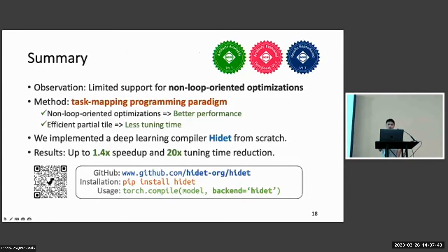We have observed that TVM has the limitation that it does not have good support for non-loop-oriented operations. We proposed a new way to construct tensor programs, we call it task mapping programming paradigm, which has better support for non-loop-oriented operations, which allows us to have better performance. It can also support efficient parallel tile and allows us to greatly reduce the schedule space and reduce the tuning time. We implemented this idea in a new compiler called Hidet and achieve up to 1.4 times speedup and 20 times reduction in the tuning time.